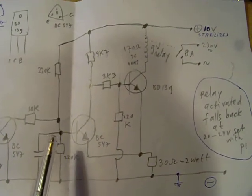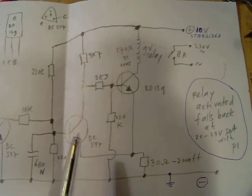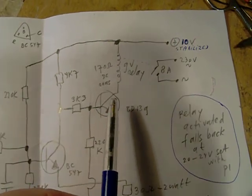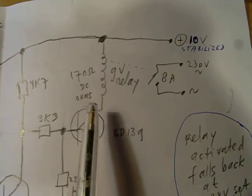When we vary the voltage here, the trigger suddenly switches on or off. That means that this relay here is activated.